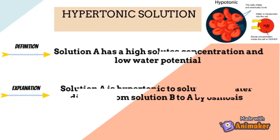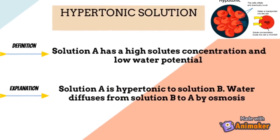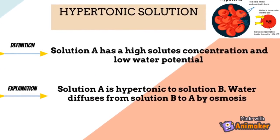In a hypertonic solution, solution A has a high solute concentration and low water potential compared to solution B. We say that solution A is hypertonic to solution B in this condition.